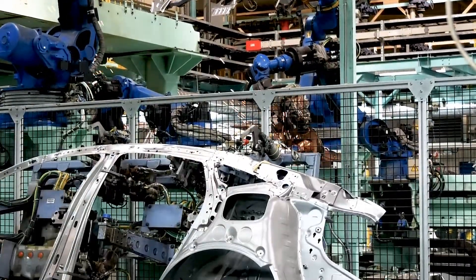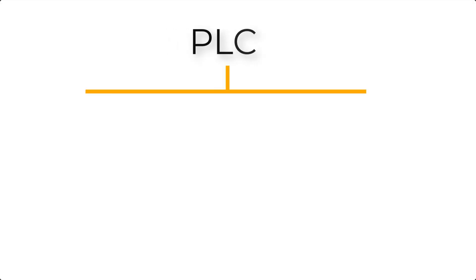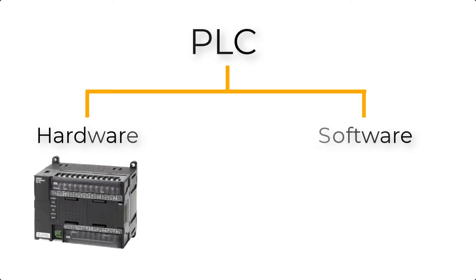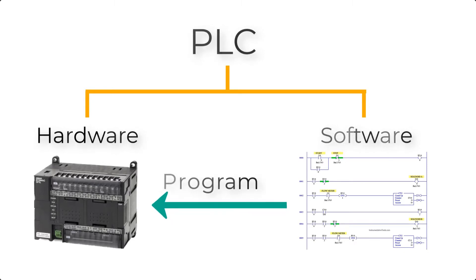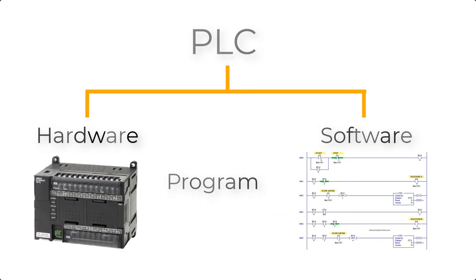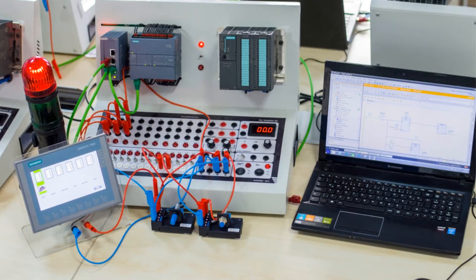A PLC basically consists of solid-state hardware and software. The hardware can control the process according to the program stored in it. Users can store instructions in the PLC's memory in the form of software, which is called a program, and the user can change or edit the program at any time. That's why it is called a Programmable Logic Controller.